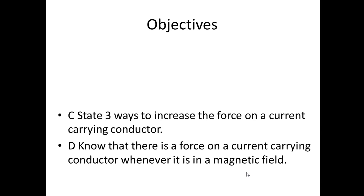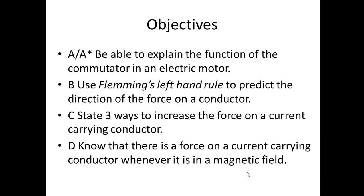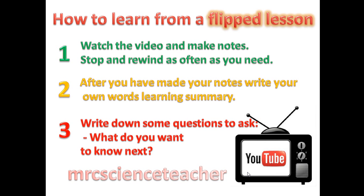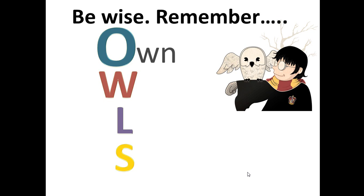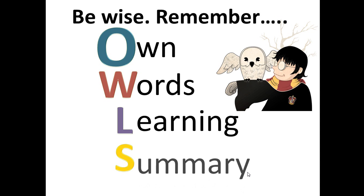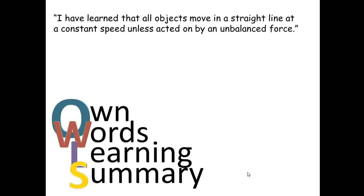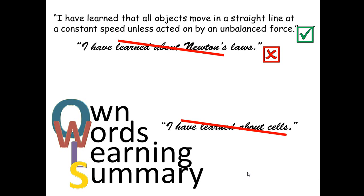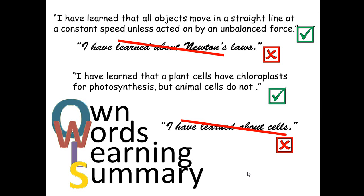Your objectives are all about understanding how electricity affects electric currents. Normal setup — three things to do. Don't forget your own words learning summary. We should be seeing something about what you've learned, not just what you've been learning about. So it's stating facts about something you've learned, not just the topic of the day or video. Make sure you get your own words learning summary right at the end.